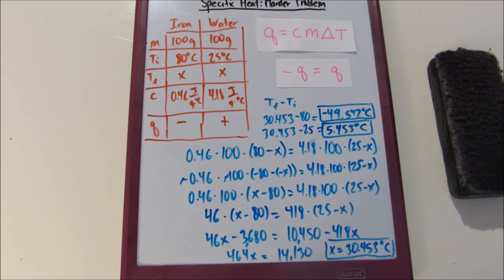And yeah, so that was a little more complicated than the last problem but as long as you remember negative Q equals Q and Q equals CM delta T you'll be good to go.